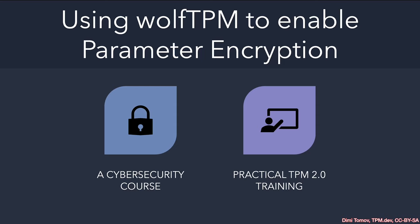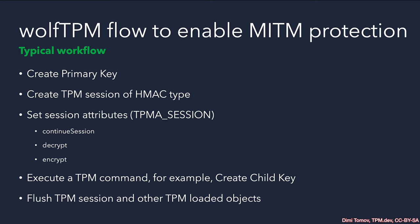Welcome to this OST2 lecture about how to enable parameter encryption when using the WolfTPM TSS library. When using the WolfTPM stack, we first need to create a primary key, because this primary key will be used to create the shared secret required for the TPM session in order to enable parameter encryption.